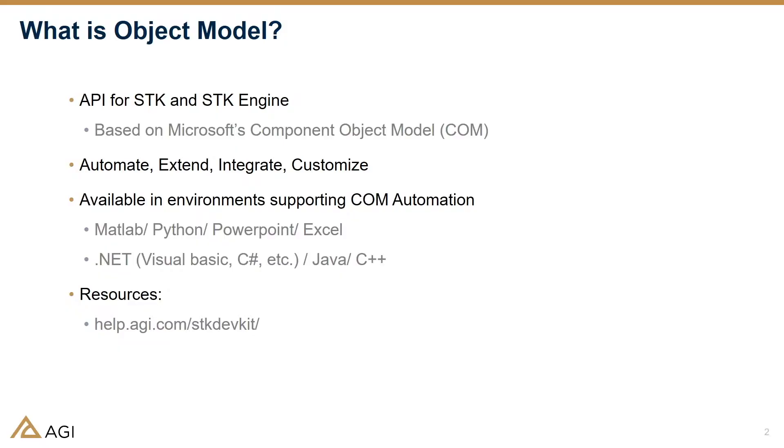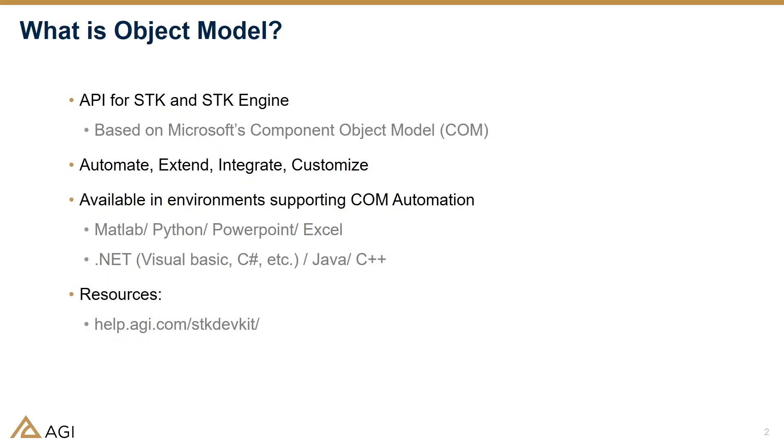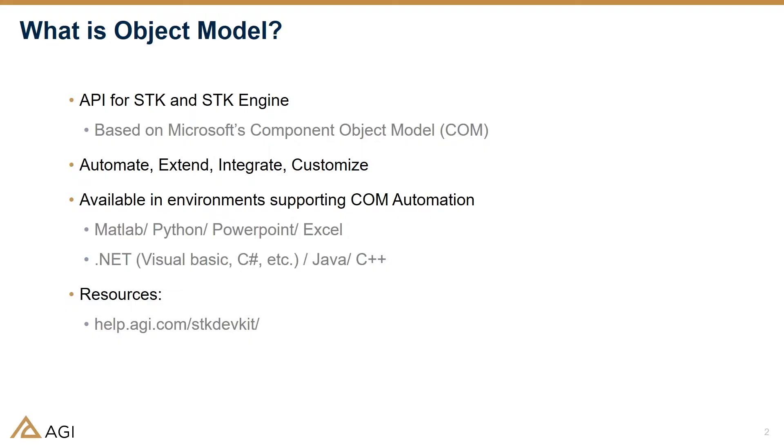First things first, what is object model? That's a term that sometimes confuses customers if they're not familiar with it. Basically, when we refer to object model, it is the API for SDK — an application programming interface. The name object model comes from component object model, which is Microsoft's technology. So when you hear object model, it is the API for SDK.